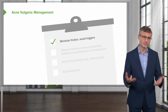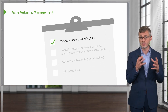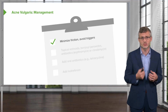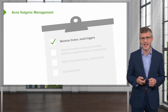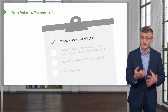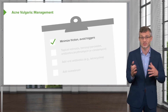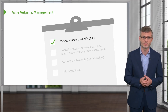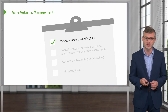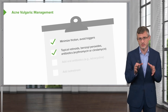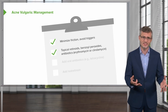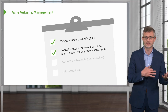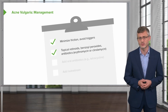Moving on to the management of acne vulgaris. Typically, we want to try and minimize friction — for example, if somebody wears a helmet with a chin strap, that can contribute to flares of acne. You want to avoid particular triggers, including topical corticosteroids, oral contraceptive pills, and medications like lithium and phenytoin. In terms of treating the disease, we start off with basic things like topical retinoids, benzoyl peroxide, and mixtures of topical antibiotics like erythromycin and clindamycin.